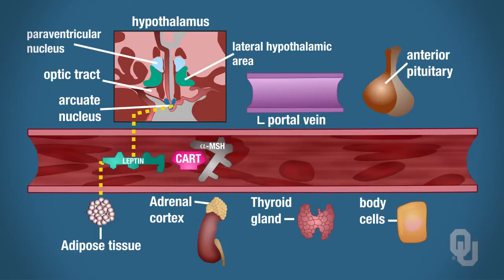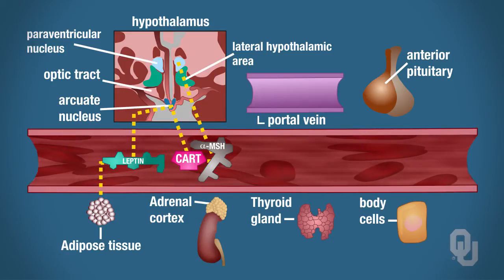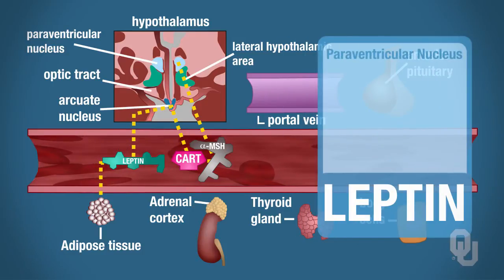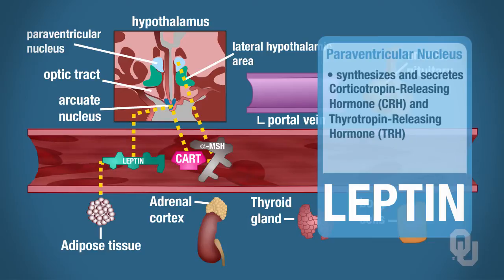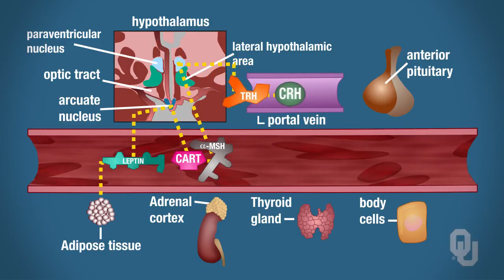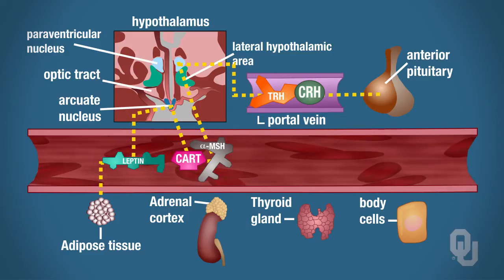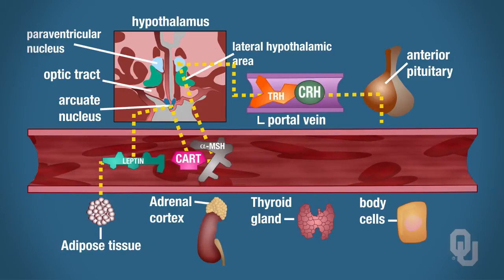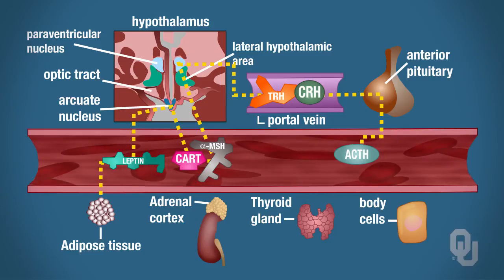Alpha-MSH and CART target another part of the hypothalamus called the paraventricular nucleus. The paraventricular nucleus is responsible for synthesizing and secreting corticotropin-releasing hormone (CRH) and thyrotropin-releasing hormone (TRH). These travel through a portal vein to the anterior pituitary, where CRH causes secretion of ACTH and TRH causes secretion of thyroid-stimulating hormone (TSH).